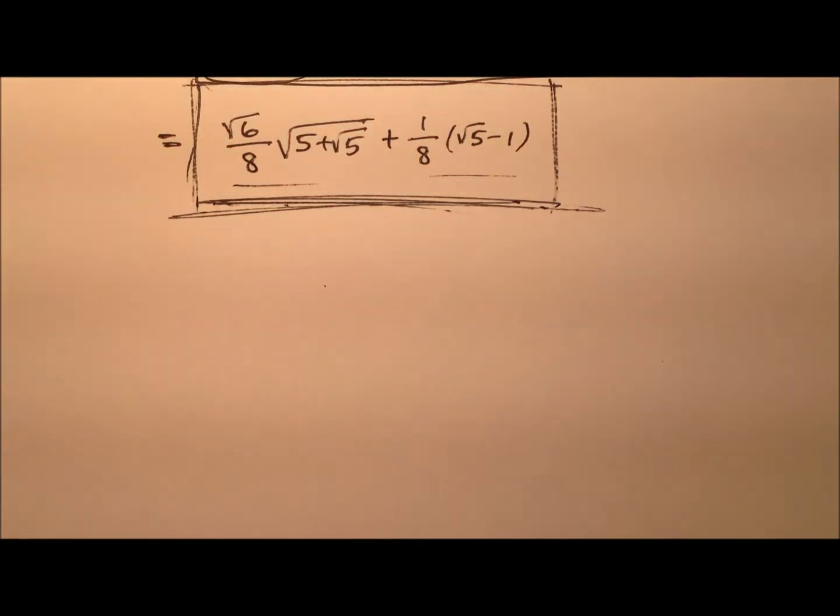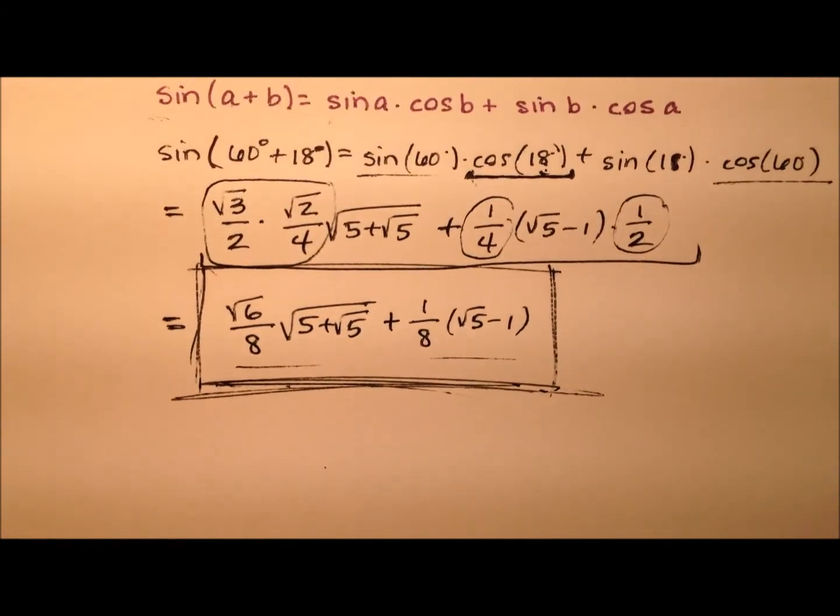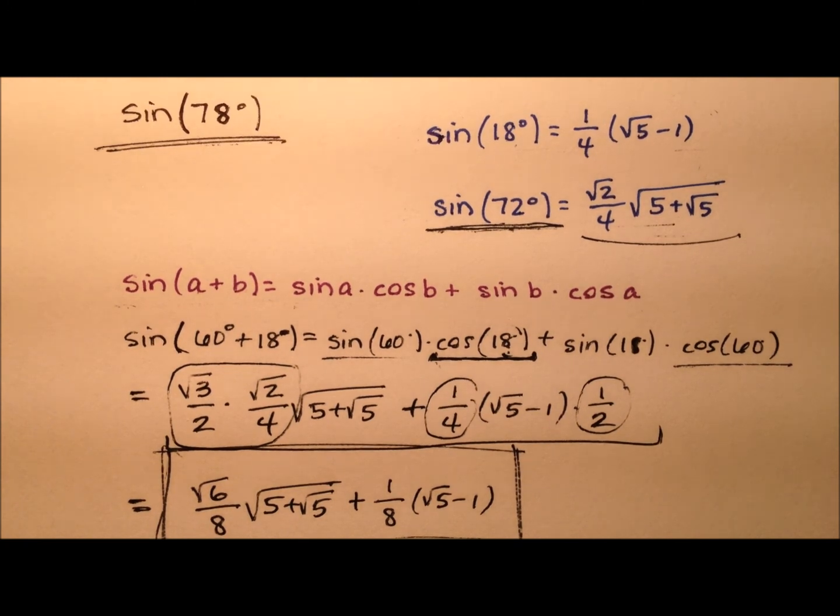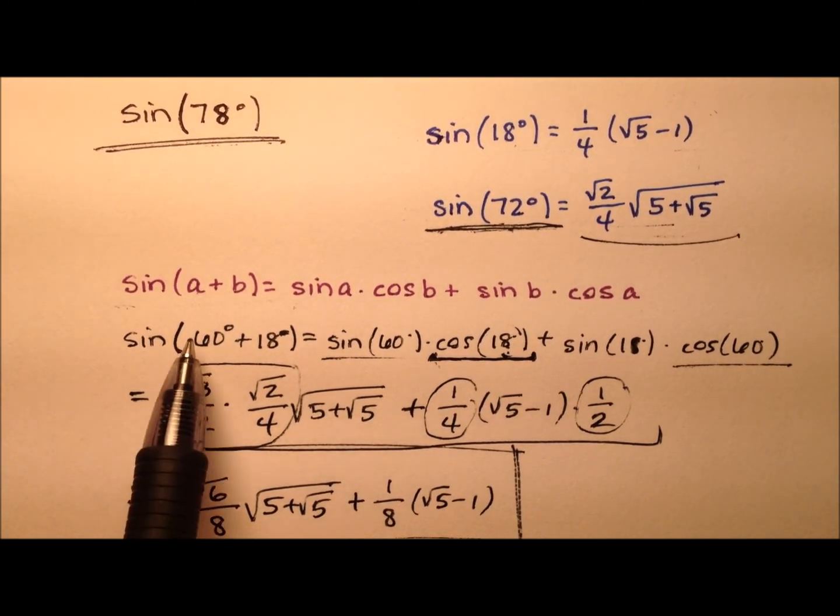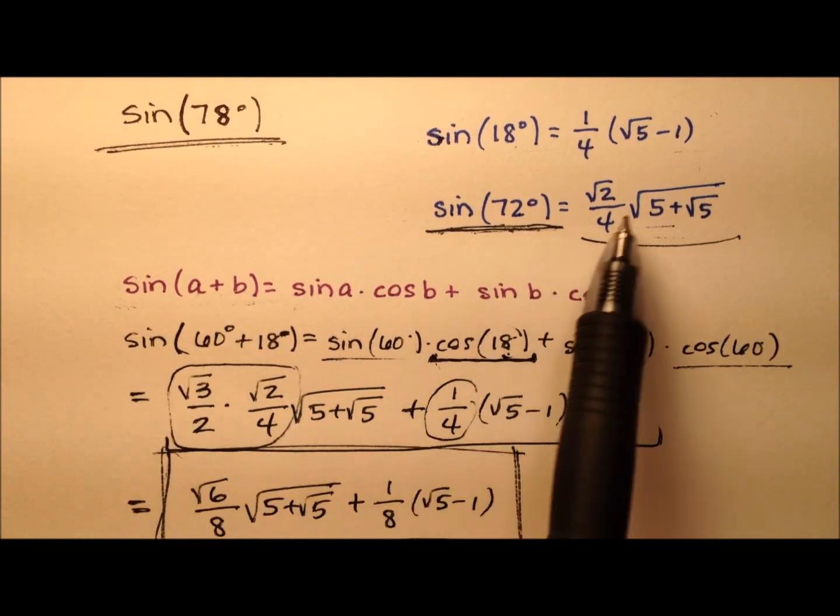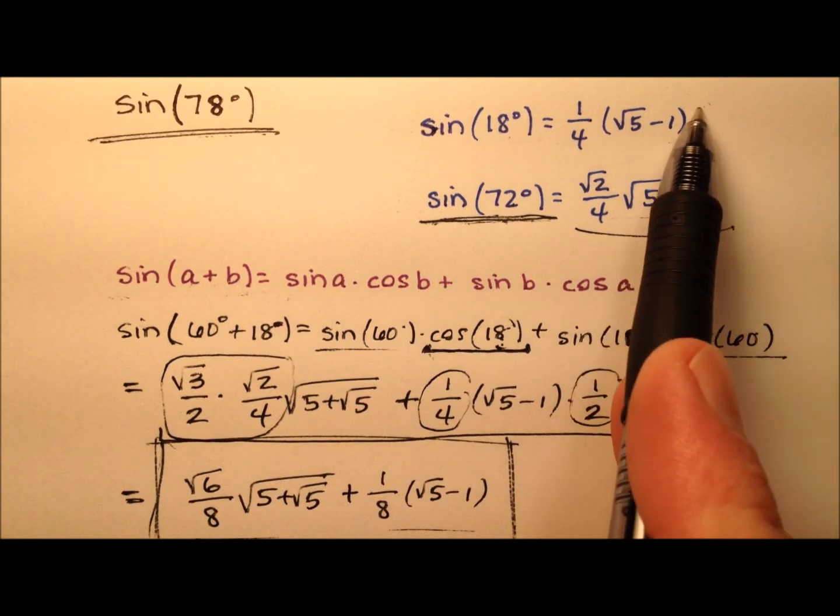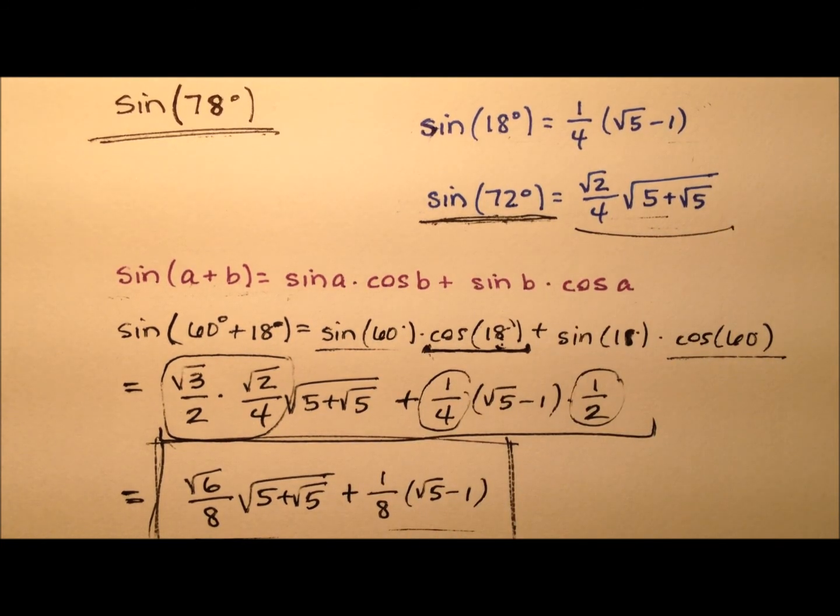So, we can see then that this irrational expression is going to give us the exact value for 78 degrees. And that's the sine of that angle, of course. We went ahead and used the sum identity for sine and employed a couple of values that we found in previous videos. Once again, you can find links to these videos down below in the description for this video.